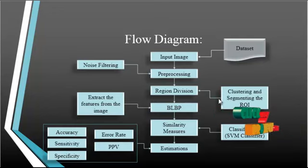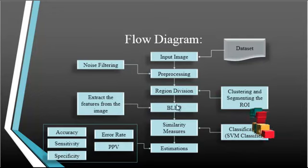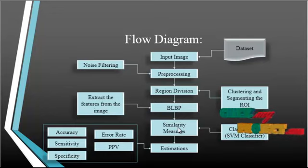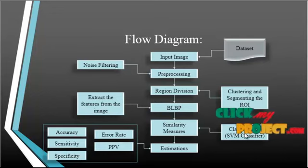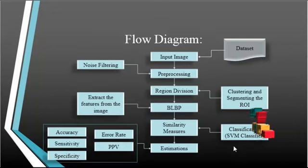Region division involves clustering the image to isolate the region of interest from the background. After region division, BLBP is applied and the feature is extracted from the clustered image. The similarity measure is then carried out, which is essentially the classification step. An SVM classifier is used as the similarity measure, and the corresponding classified output is assigned in integer form.